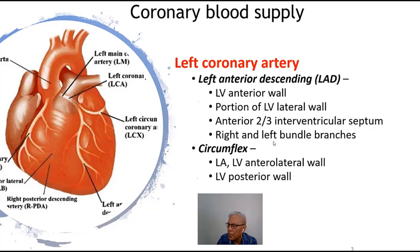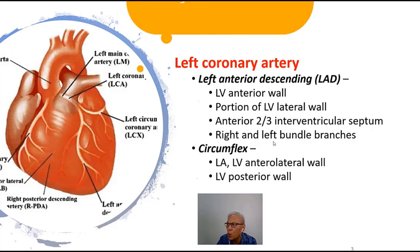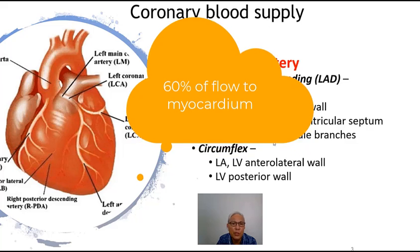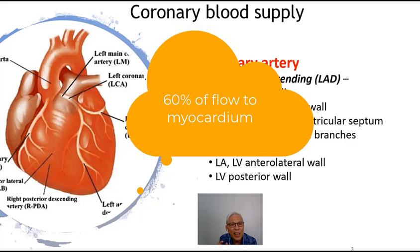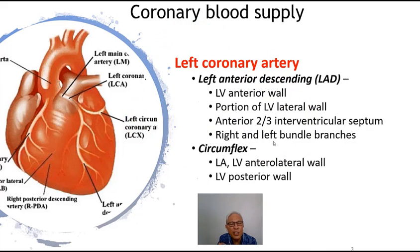The left coronary artery has two branches and provides sixty percent of flow into the myocardium. That is the reason why whenever there is a lesion or pathology in the left coronary artery, the implication is very significant, because it supplies sixty percent of the myocardium.